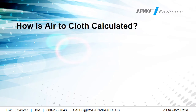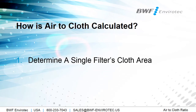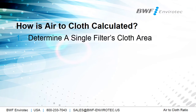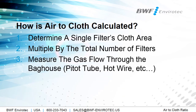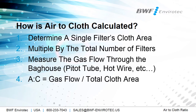How is air-to-cloth ratio calculated? First, we need to determine the single filter's cloth area and then multiply that by the total number of filters. Then measure the gas flow through the baghouse — this can be done with a pitot tube, hot wire, etc. There are a couple of ways to get the gas flow measurement. Then simply take the gas flow in ACFM divided by the total cloth area in square feet, and that will give you your air-to-cloth ratio.